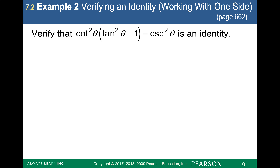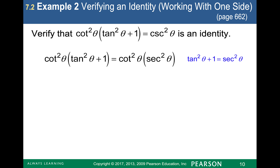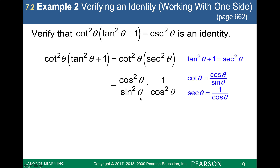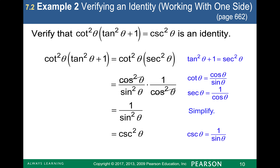Here's another example: to verify cotangent squared times (tangent squared theta plus 1) equals cosecant squared theta. I recognize tangent squared theta plus 1 as the fundamental identity equal to secant squared theta, so I replace what's inside the parentheses with secant squared theta. Then I rewrite everything in terms of sine and cosine using fundamental identities, the cosines cancel, and 1 over sine is cosecant — confirming the identity.